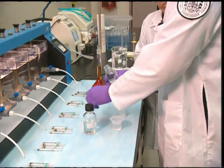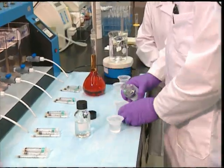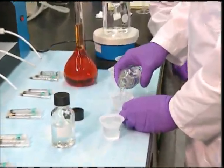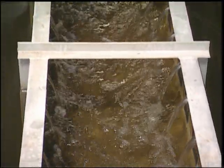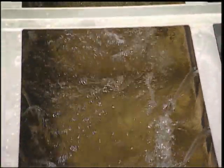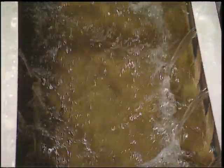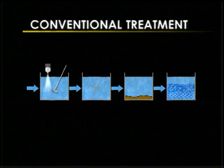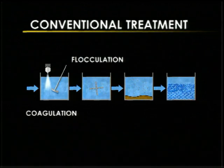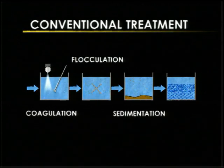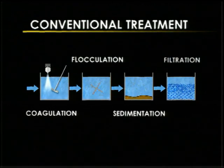The most common use of jar testing is to determine the appropriate use and dose of chemicals in water treatment. One objective of water treatment is clarification, the removal of particulate matter in the water. Particles are removed both chemically through coagulation, flocculation, and sedimentation, and physically through filtration.